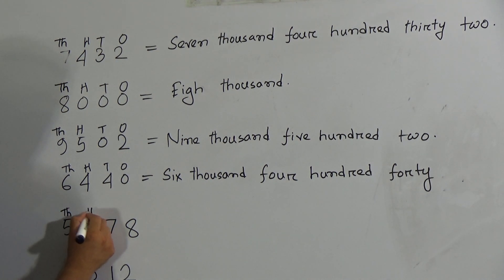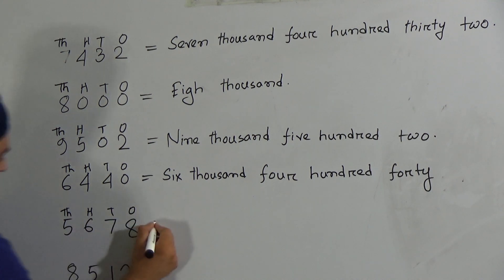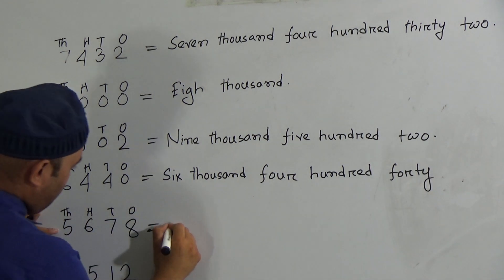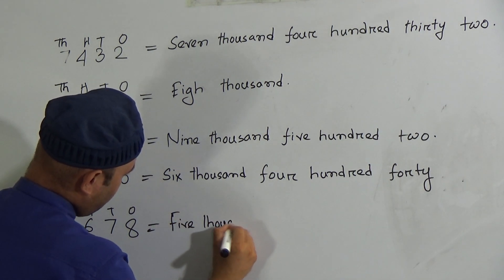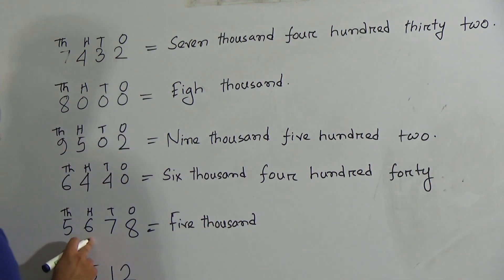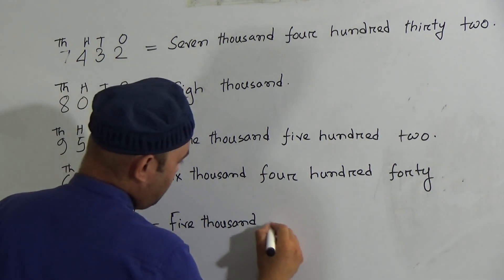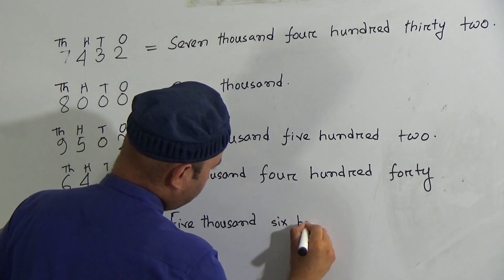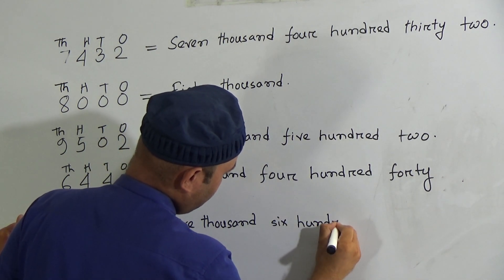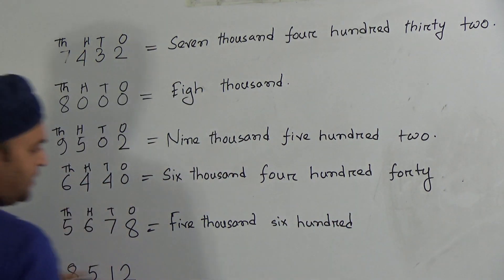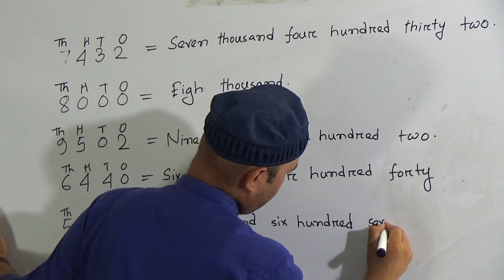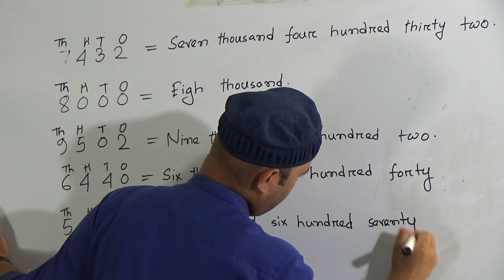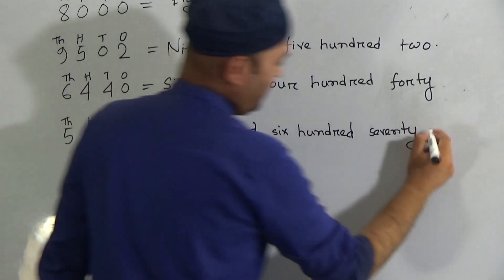The next number is 5,678. Five is in the thousand place, six is in the hundred place — so six hundred — seven is in the tens place — so seventy — and eight is in the ones place. So in words this is five thousand six hundred seventy-eight.